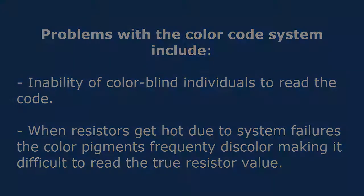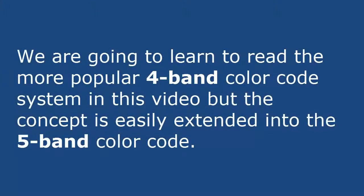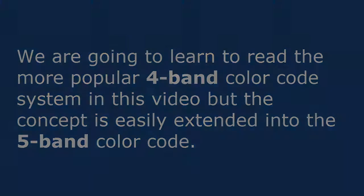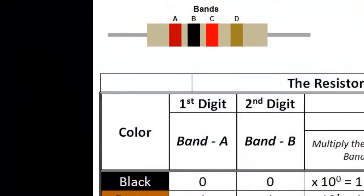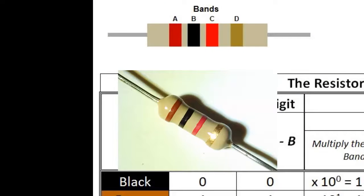We're going to learn how to read the popular four band color code system, but these techniques can be extended into the five band color code system too. Here we have a color code chart and a picture of the bands on a resistor. The bands for this particular resistor are brown, black, red, and gold for bands A, B, C, and D. This is a 1k resistor, by the way.